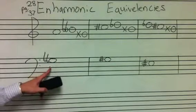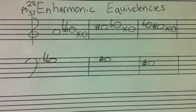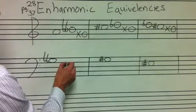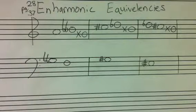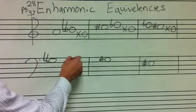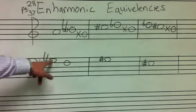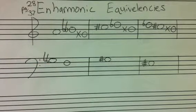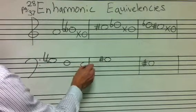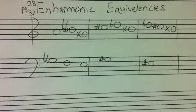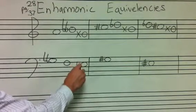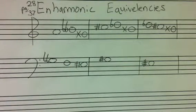The next one: in bass clef, I have a G double-flat. G double-flat is actually the note F — so there's your first answer. I'm not going to use an A because that's way too far from G double-flat. I'm going to use an E. What kind of E can I use to land on F? E-sharp. If I sharp E, I land on F. So that one's complete.